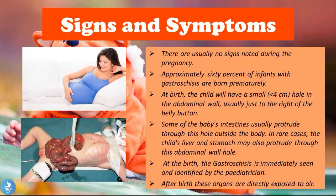There are actually no signs noted during the pregnancy, so these mothers usually have a normal pregnancy without experiencing any signs or symptoms. Approximately 60% of infants with gastroschisis are born prematurely. At birth, the child will have a small hole — less than 4 centimeters — in the abdominal wall, usually just to the right of the belly button. Looking at this actual patient image, we can see a hole just to the right of the umbilicus through which loops of bowel have protruded, with visible discoloration, irritation, and swelling of those bowel loops, impairing their ability to digest and absorb nutrients.